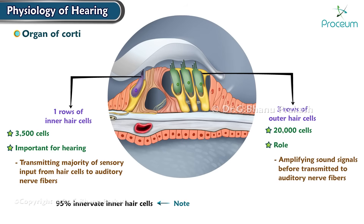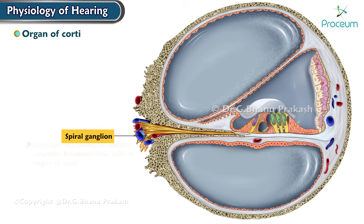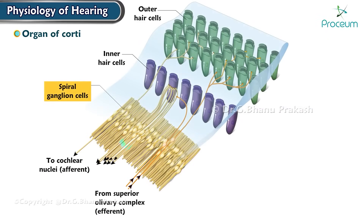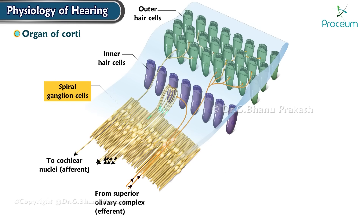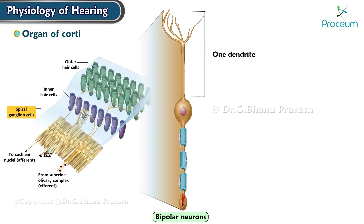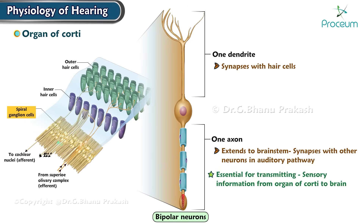95% of sensory neurons innervate the inner hair cells. The spiral ganglion contains the cell bodies of the sensory neurons that innervate the hair cells of the organ of Corti. These spiral ganglion neurons form synapses with the hair cells and transmit electrical signals generated by the hair cells to the brain. They are bipolar neurons with one dendrite that synapses with the hair cells and one axon that extends to the brain stem, where it synapses with other neurons in the auditory pathway.